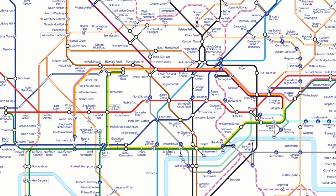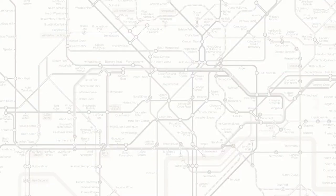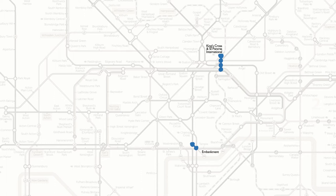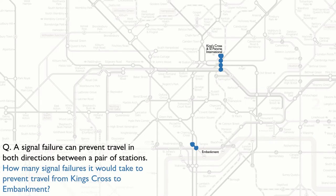Let's take Euler into the 21st century to London. Here's a question. Suppose I want to take the tube from King's Cross to Embankment. Now, as we all know, the tube isn't always 100% reliable. There are sometimes signal failures, and if there's a signal failure, then it will prevent travel in both directions between a pair of stations. So here's a question for a modern day Euler: How many signal failures would it take to prevent travel from King's Cross to Embankment?